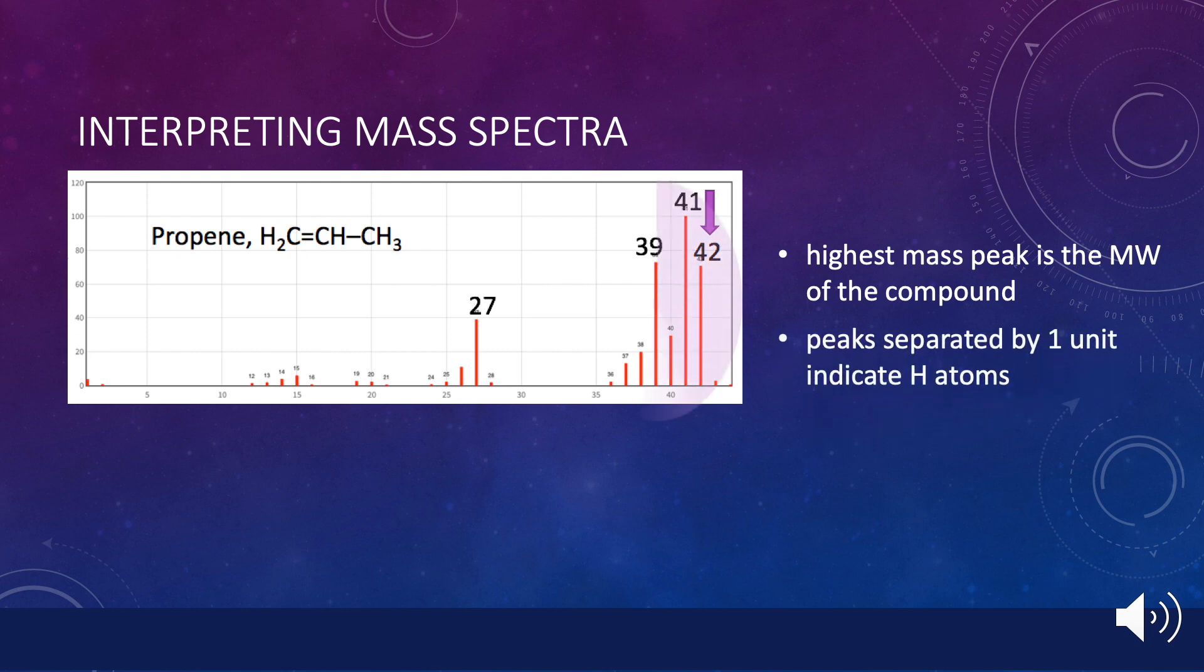If there are peaks separated by one mass unit, particularly near the right end of the spectrum, the molecule must contain hydrogen. Prominent peaks in the middle of the spectrum usually denote major fragments, such as the peak at mass 27.